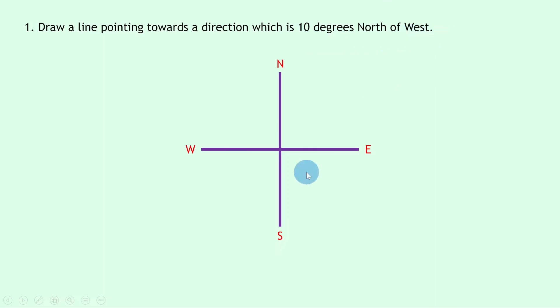To draw a line which is 10 degrees north of west, we need to go to west and then go 10 degrees towards north from west. That means our line is going to be around here, where this angle in here is 10 degrees, and that means we're going towards north away from west.